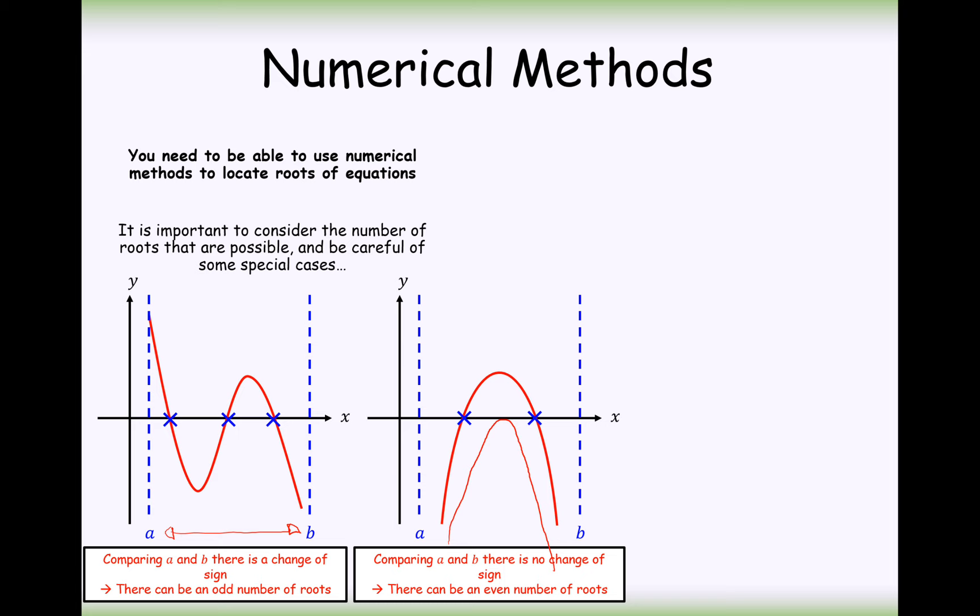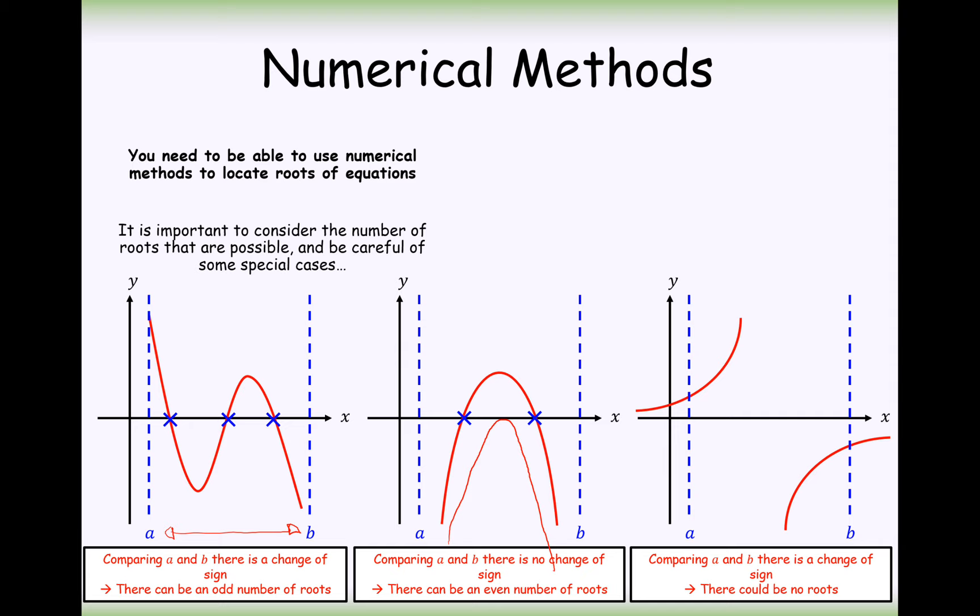This theorem is never going to work. And as well, if you've got a discontinuous function here, like the 1 over x graph here, you're not going to have a root here, but you're going to see a change in sign. So you're going to think that there's a change in sign where there actually isn't. So you're going to think there's a root, but there actually isn't. There are some examples where it doesn't work. You're probably going to be given an example where it does work, but you may have to explain why it doesn't work for some equations.